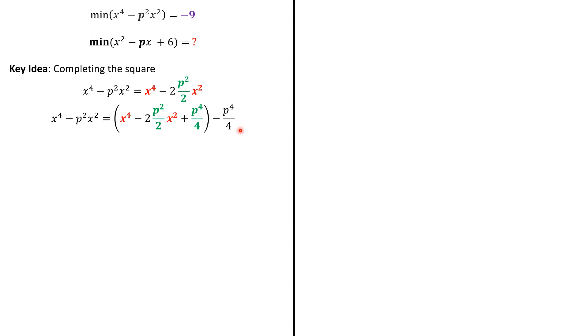So, we add p⁴/4. And we subtract the same to keep the quantity equal on both sides. Now, here, it is the square of x² - p²/2. So, we have our square here.